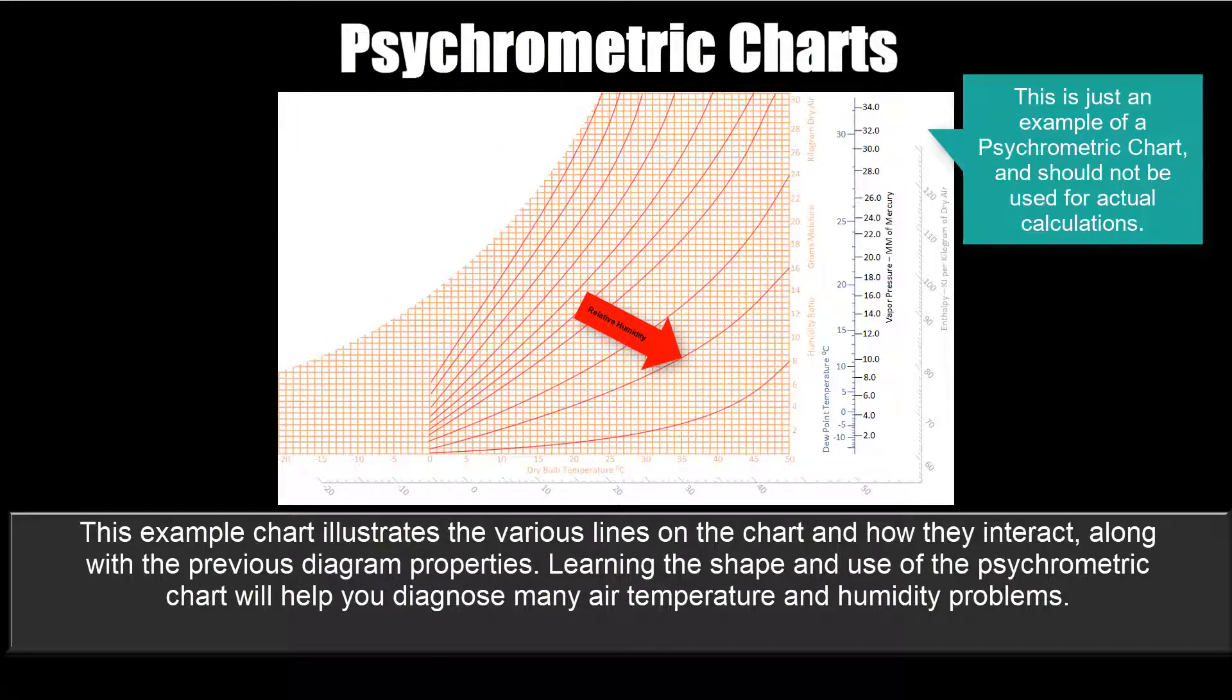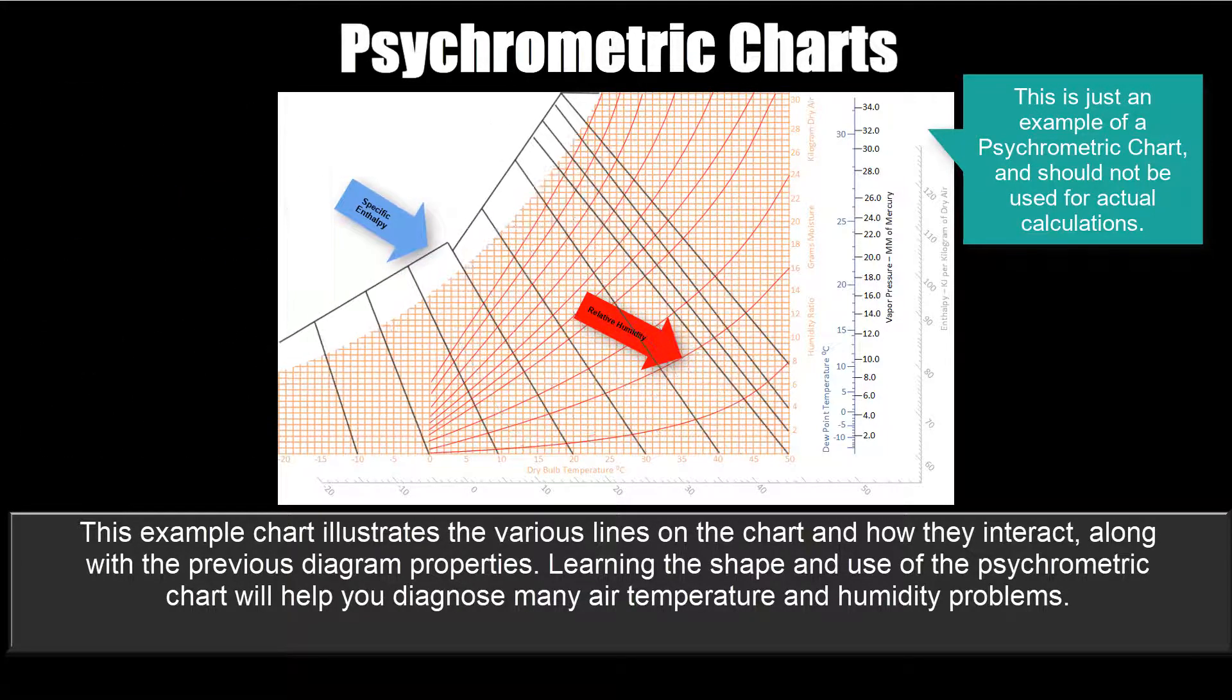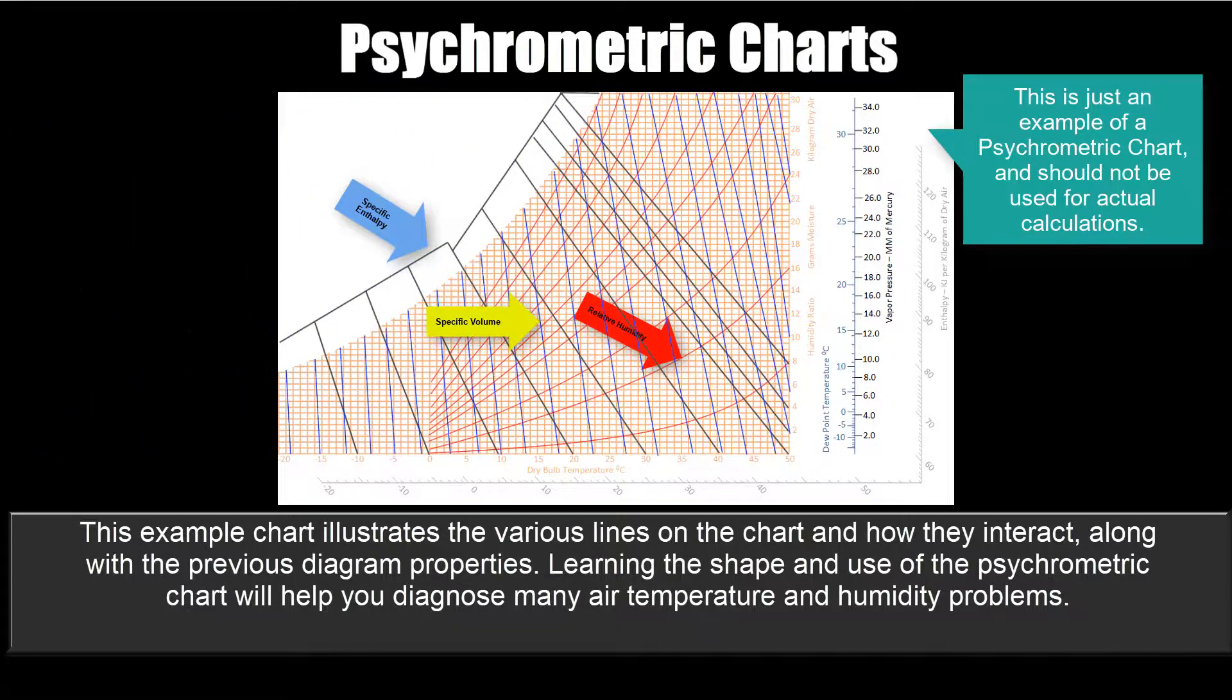Relative humidity, in red, this curved line displaying the percentage RH. Specific enthalpy, dark gray, kilojoules per kilogram of dry air. Specific volume, blue, cubic meter per kilogram of dry air.